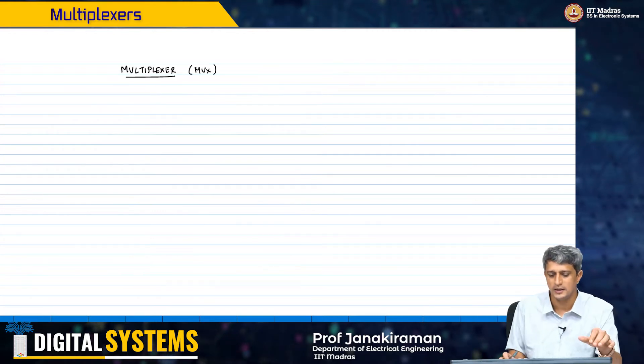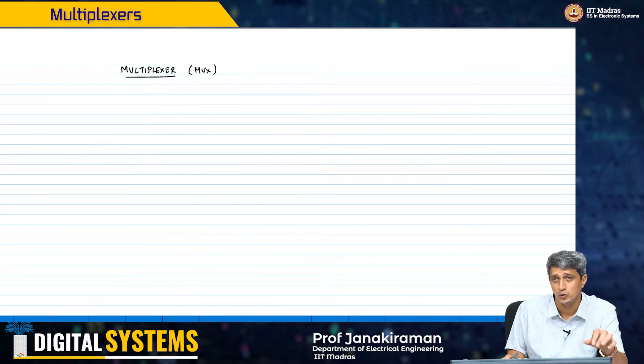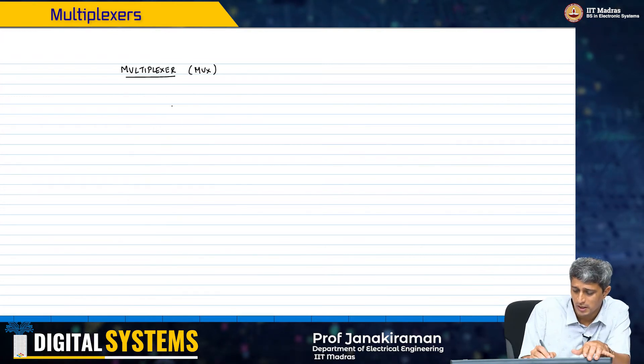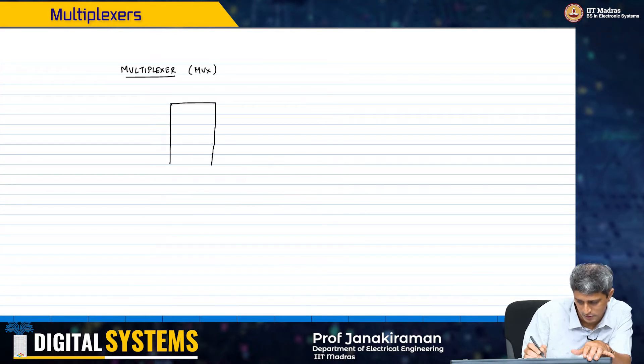The next circuit that is very commonly used and very useful is the multiplexer. Now, what is the multiplexer? Again, let us look at it from the black box perspective.